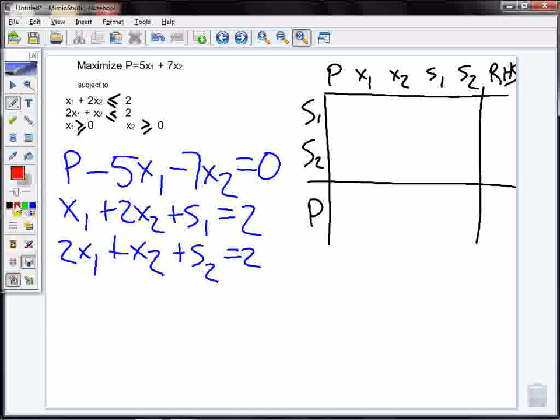So what I have for the s1, that's my first equation. That's going to be this equation that has s1 in it. So p, there's no p in this equation, so my p is 0. My x1, my coefficient in front of the x1 is just 1. My coefficient in front of x2 is 2. My coefficient in front of s1 is 1. And there is no s2. And what's on the right side? We have 2.